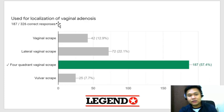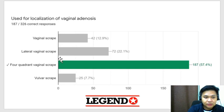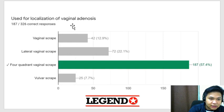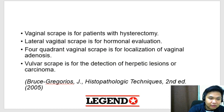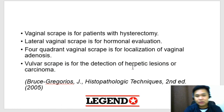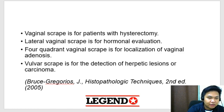Used for localization of vaginal adenosis — you have various types of specimen collection in cytology. Vaginal scrape is for hysterectomy; lateral vaginal scrape is for hormonal evaluation; four-quadrant vaginal scrape is for localization of vaginal adenosis — yun yung tamang sagot; vulvar scrape is for the detection of herpetic lesions or carcinoma. Memorize the different purposes for each type.